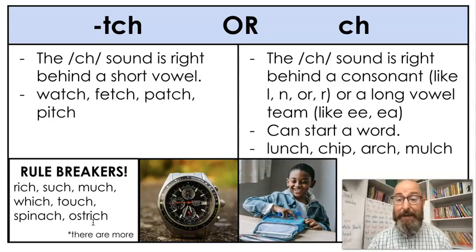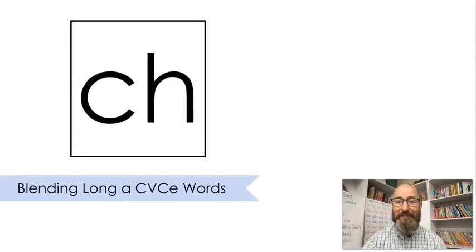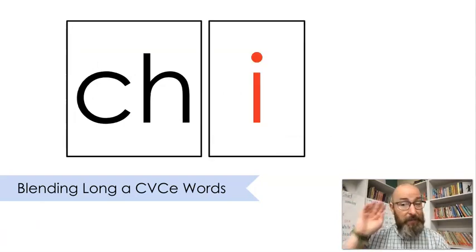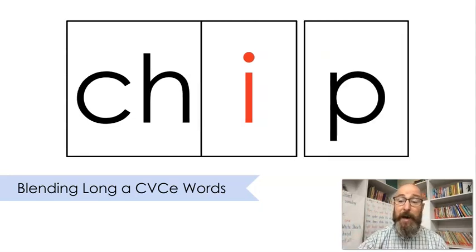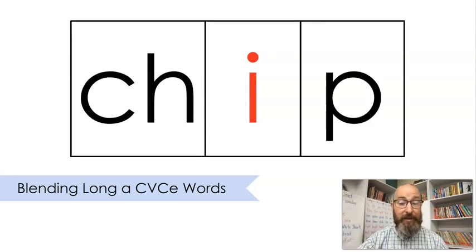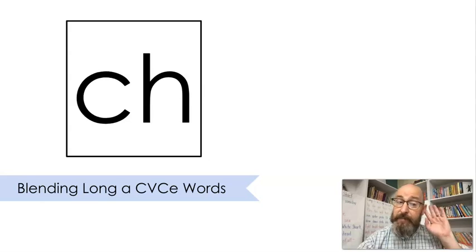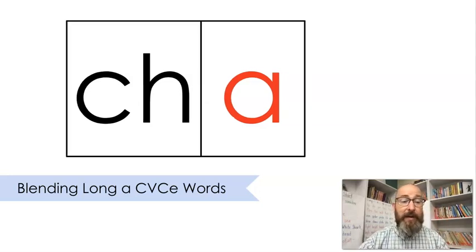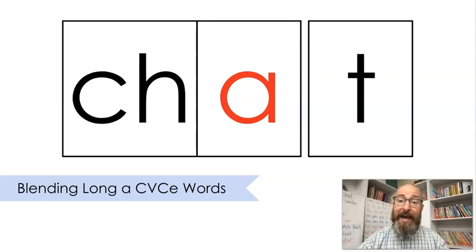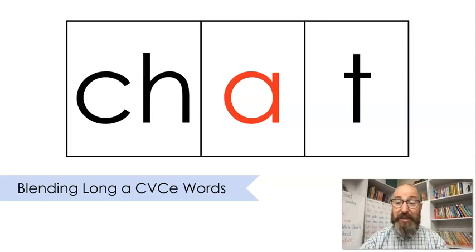Now it's time to read some words. Why don't you practice blending these with me? Let's get started. Ch — sound — I — put that together: chip. Like a chocolate chip or a potato chip. Ch — sound — A — put together: chat. You may have a little chat with a friend.